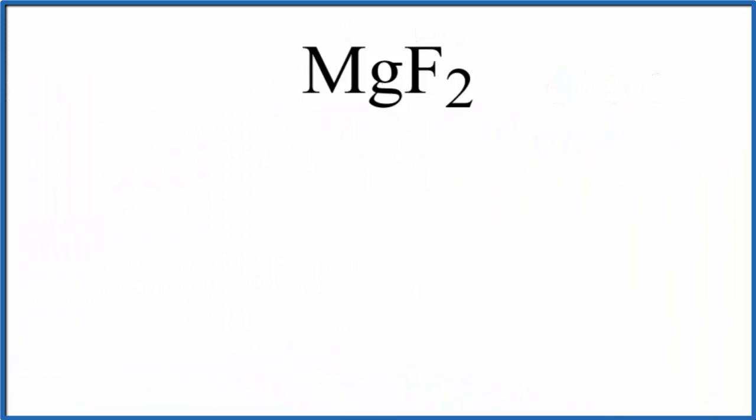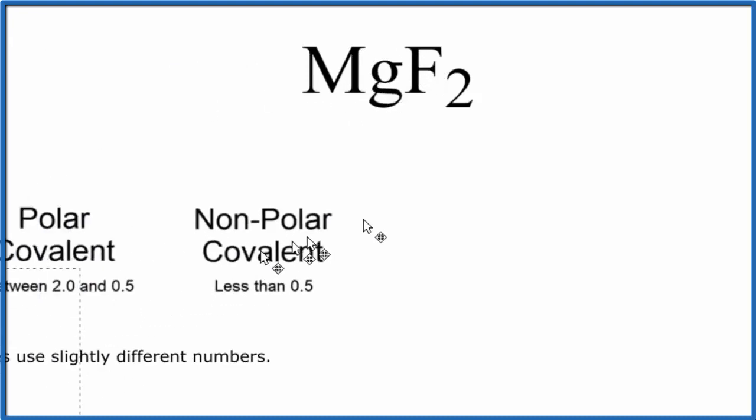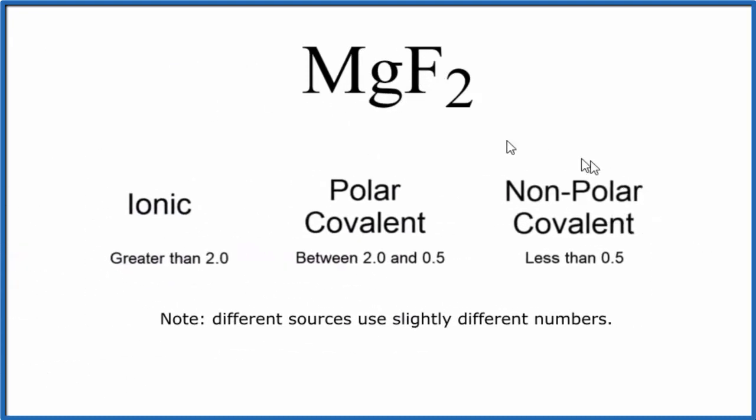We can also look at the difference in electronegativity between the magnesium and the fluorine atom. So to do that, we look at this chart here. We can see if the difference in electronegativity is greater than 2.0, it's an ionic compound.